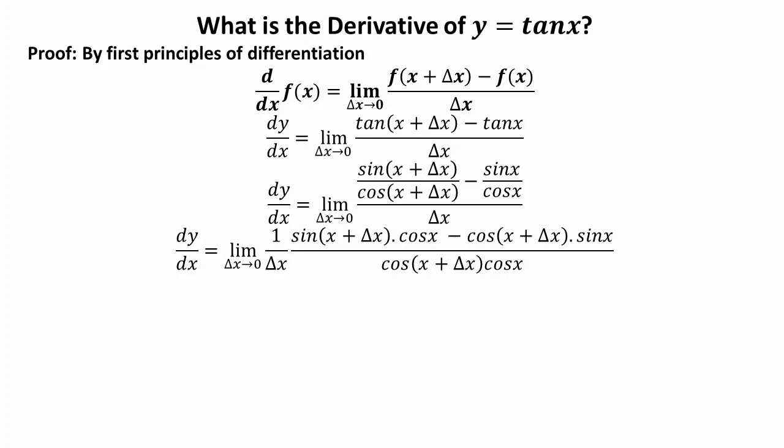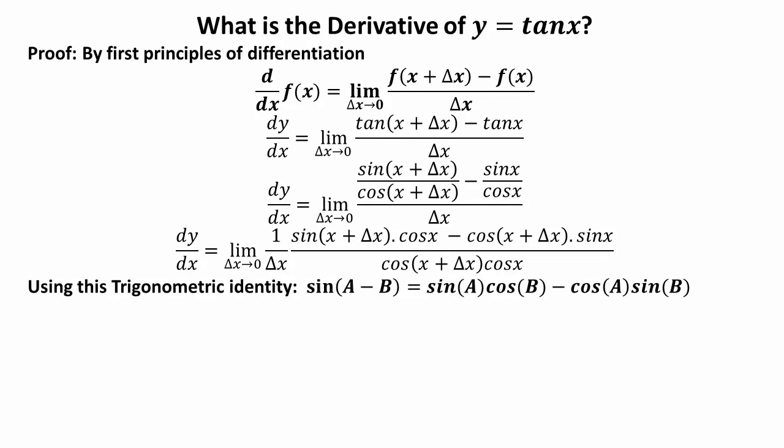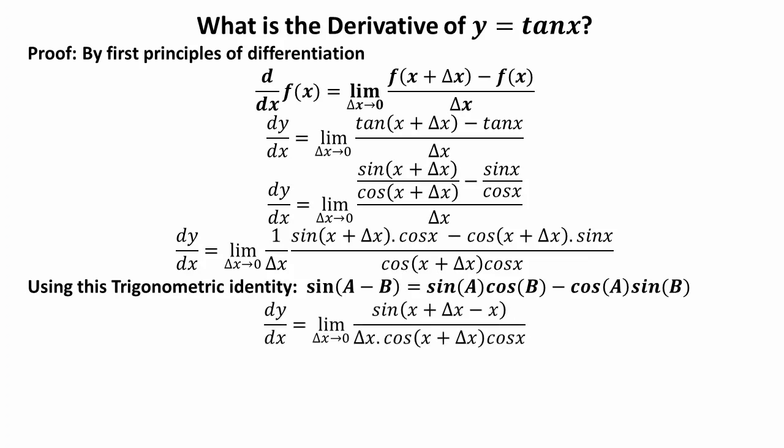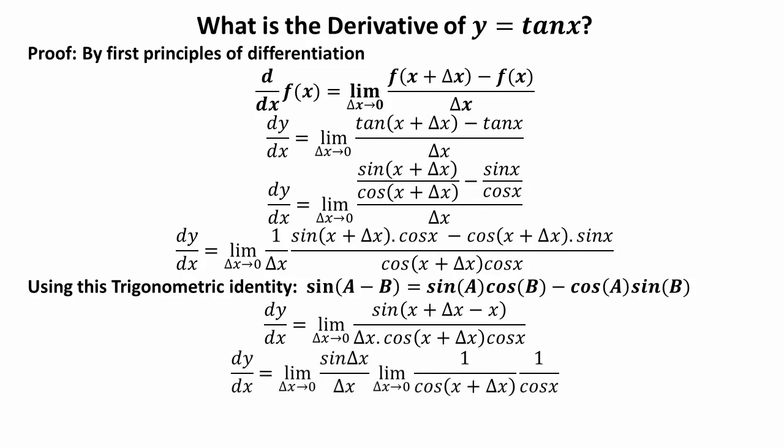Simplifying: dy/dx = limit as Δx→0 of (1/Δx) · [sin(x + Δx)cos(x) - cos(x + Δx)sin(x)] over [cos(x + Δx)cos(x)]. Now using the trigonometric identity sin(A - B) = sin(A)cos(B) - cos(A)sin(B), with A = x + Δx and B = x, substituting gives dy/dx = limit as Δx→0 of sin(Δx) over [Δx · cos(x + Δx)cos(x)].